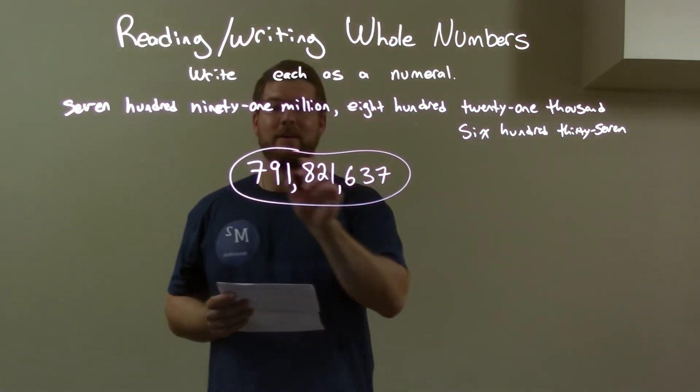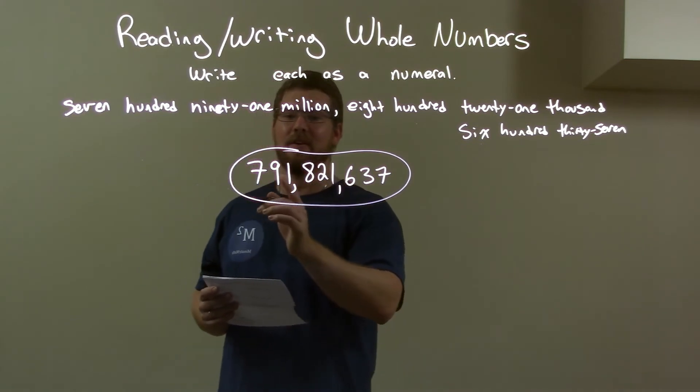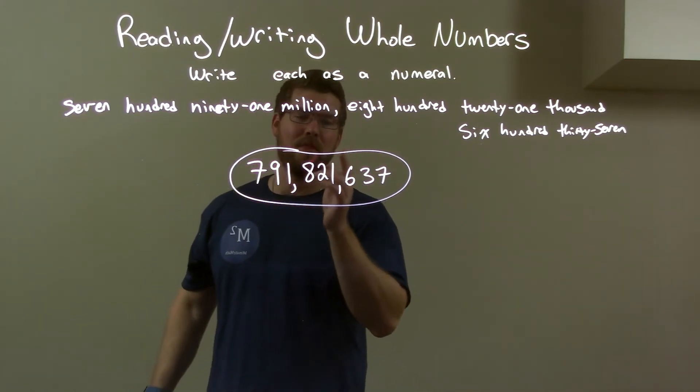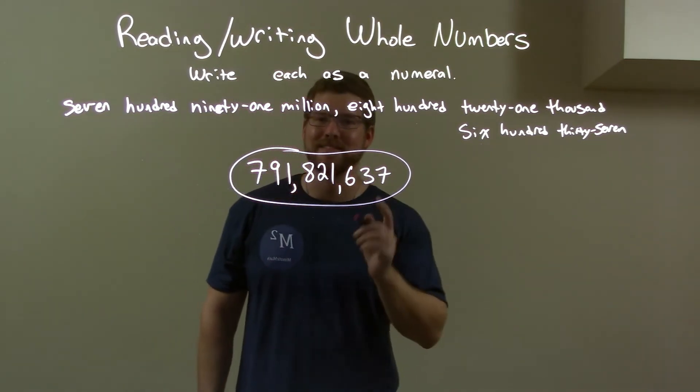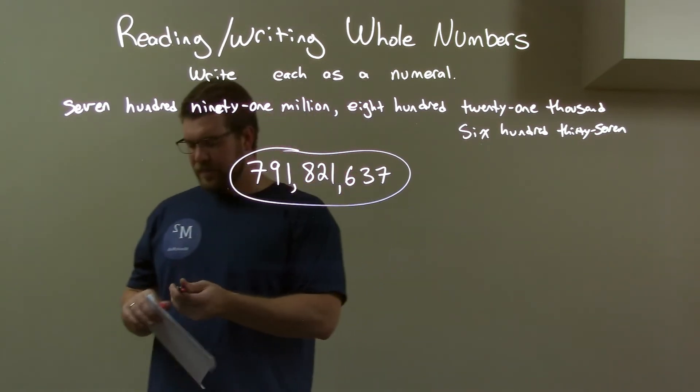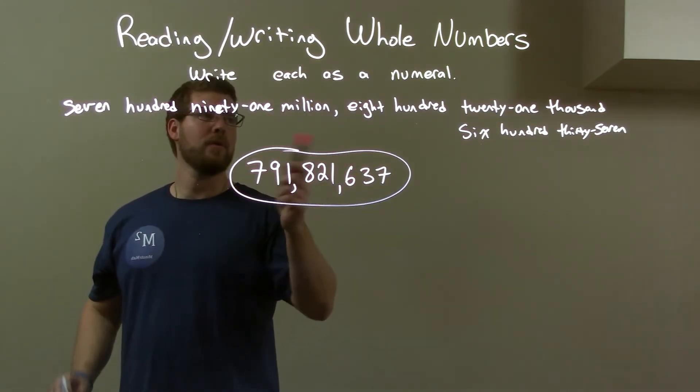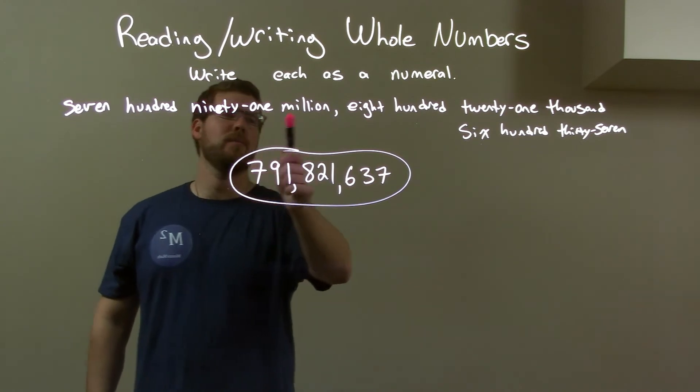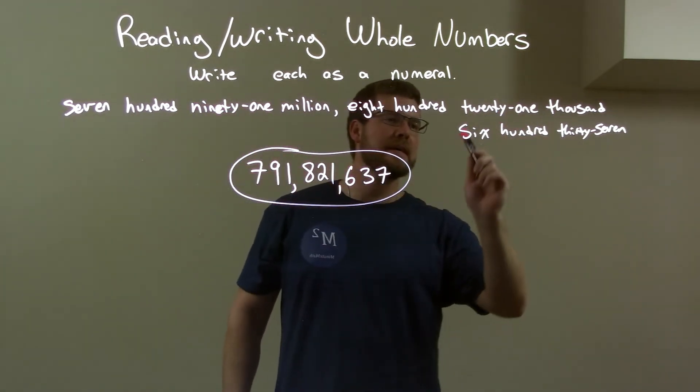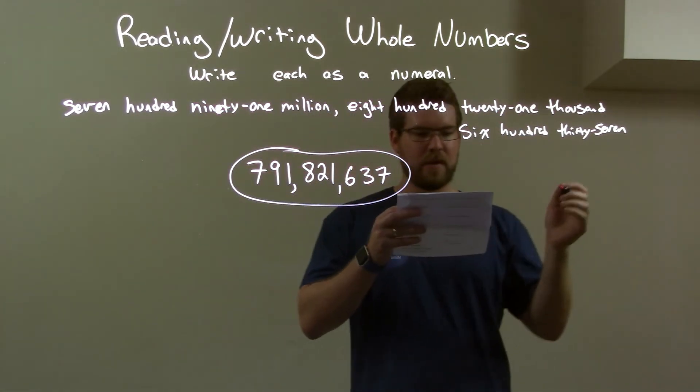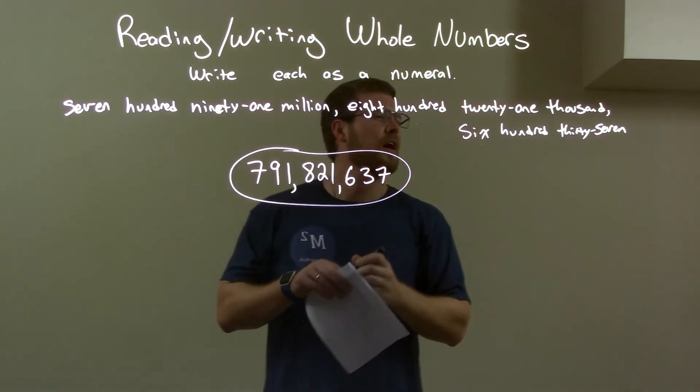And there we have our final answer: 791,821,637. So quick recap, we want to find the numeral of 791,821,637—there should be a comma right there.